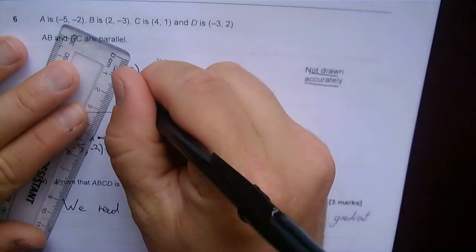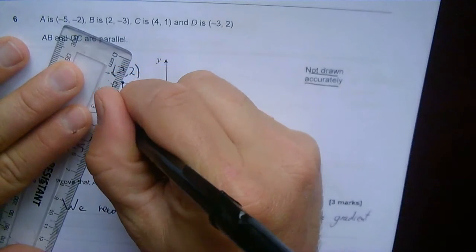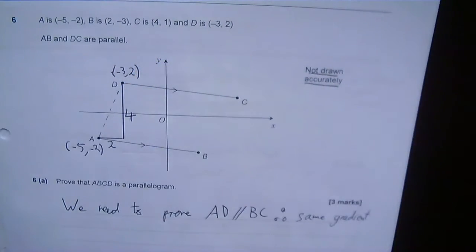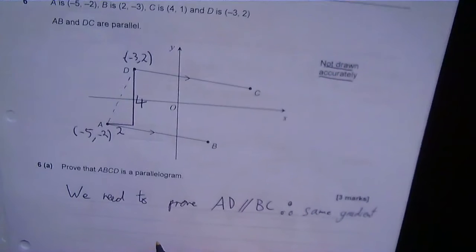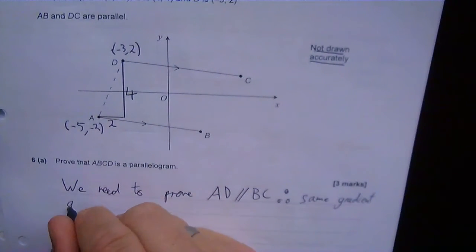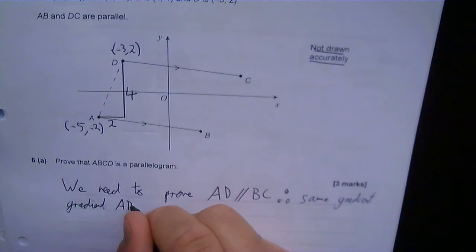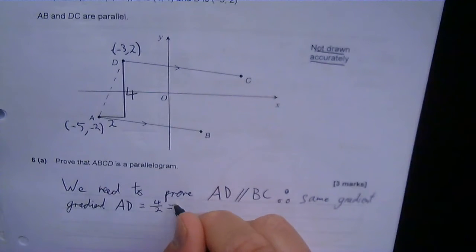So my gradient of that line there, between A and D, is 4 over 2. So gradient AD equals 4/2, which is 2.